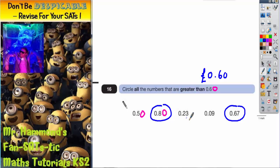23 pence is less. 9 pence. This would be 9 pence. 67 pence would be greater than 60 pence. So they are the two answers. They are the two answers greater than 0.6.